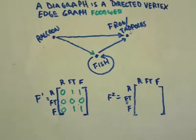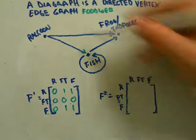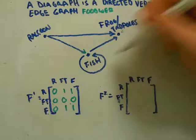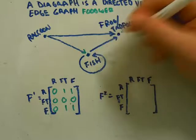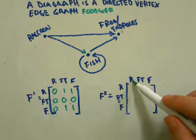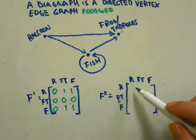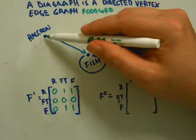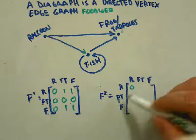F2 is food sources through one intermediary. What that means is it takes two arrows to get from, say, raccoon to the item that it's eating. Let's take a look - raccoon to raccoon, there won't be any because there wasn't one arrow, so there won't be two. Raccoons to frogs and tadpoles - how can we do that? You're going to go to fish and then from